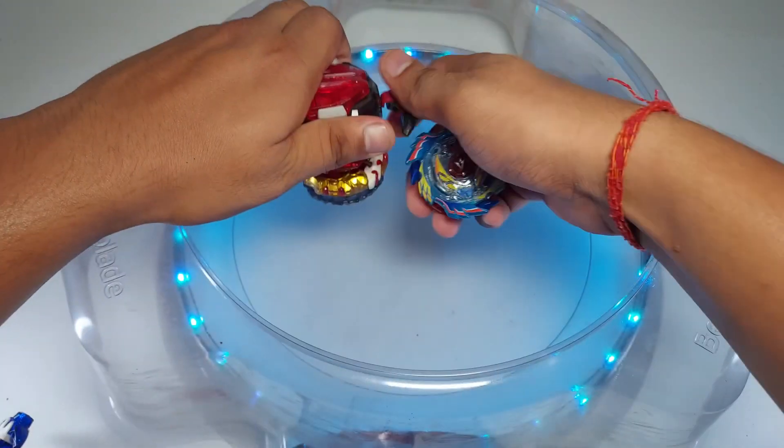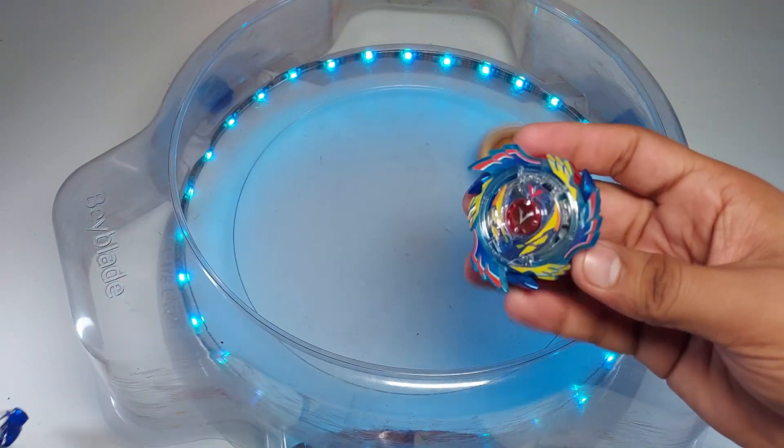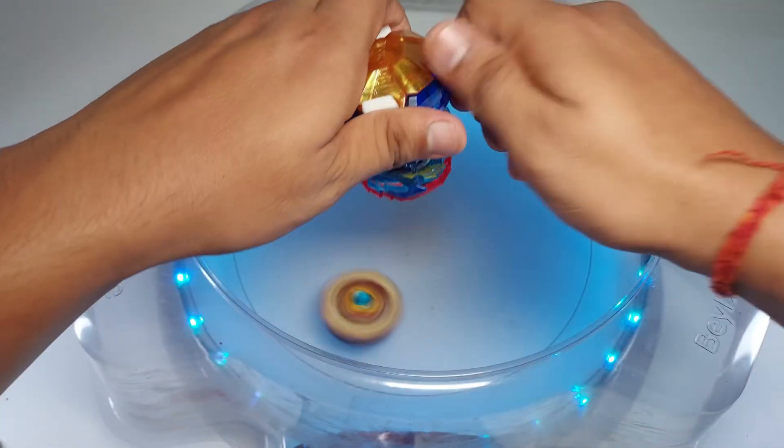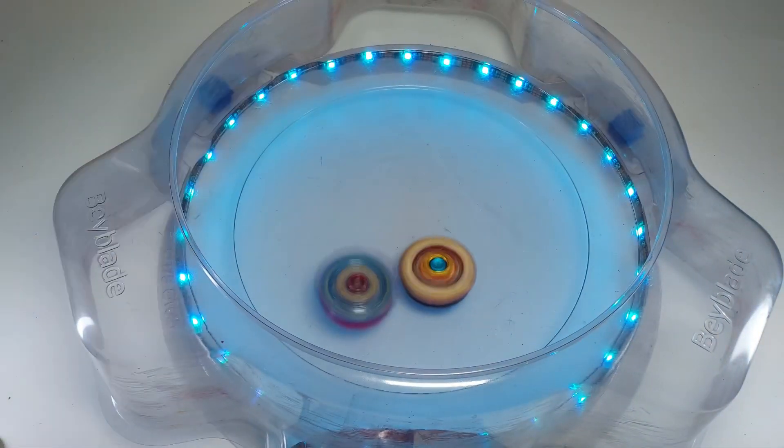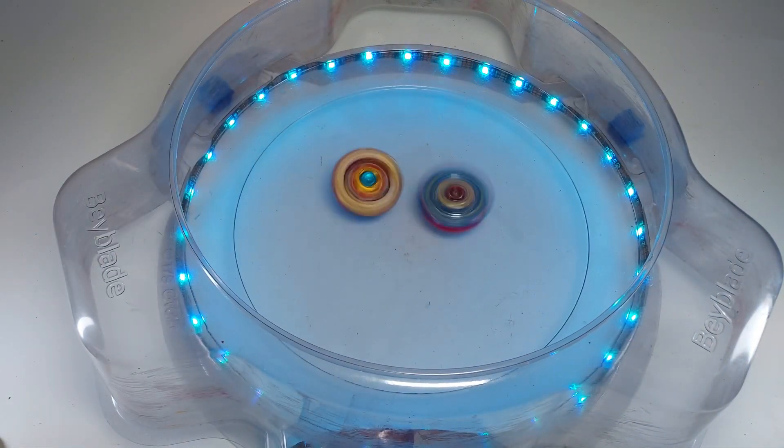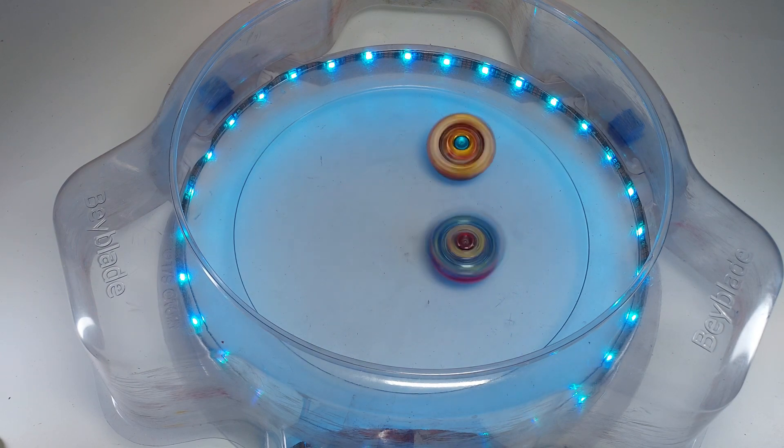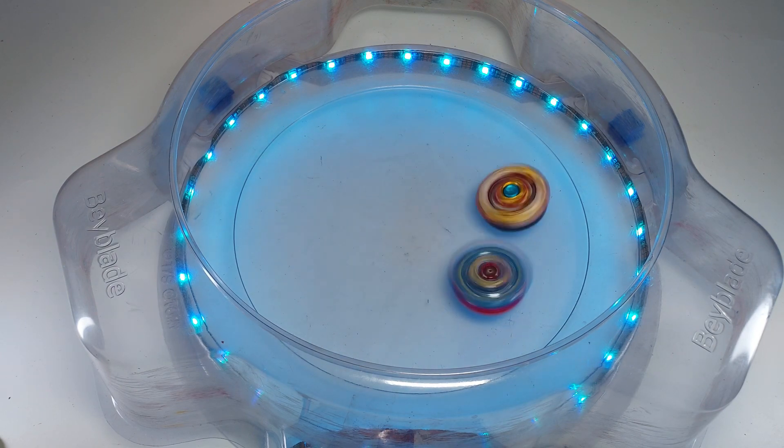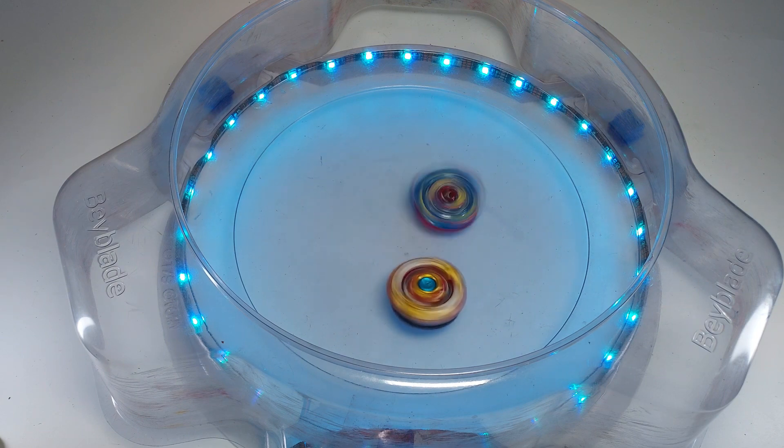First I'm gonna launch Requiem. Here we go, pretty good. Now Valkyrie. Spriggan versus Valkyrie, what a classic battle guys. Spriggan can spin steal because of the left spin. Let's see if Valkyrie can knock it out.